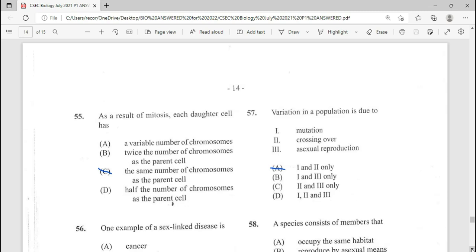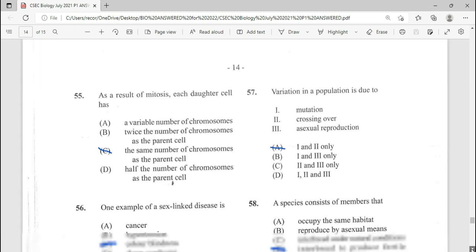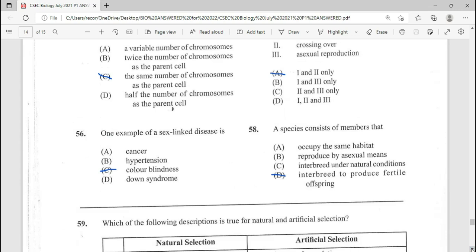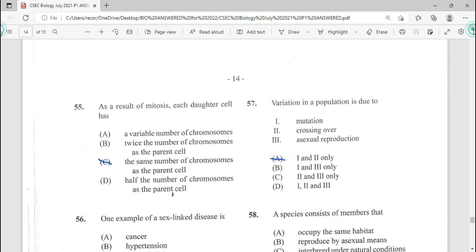Now we move on to question 55. As a result of mitosis each daughter cell has the same number of chromosomes as the parent cell. C there being the answer for 55. 56, one example of sex-linked disease is of course going to be color blindness. A repeated question for 56.